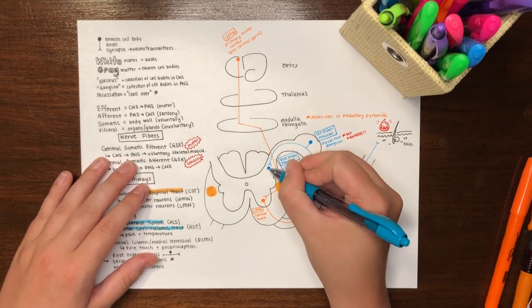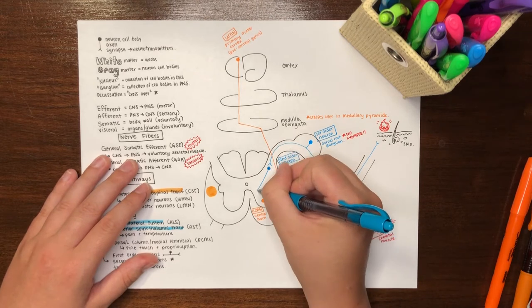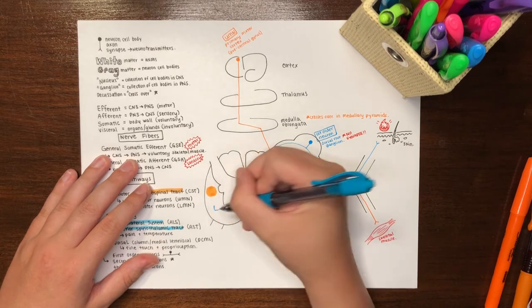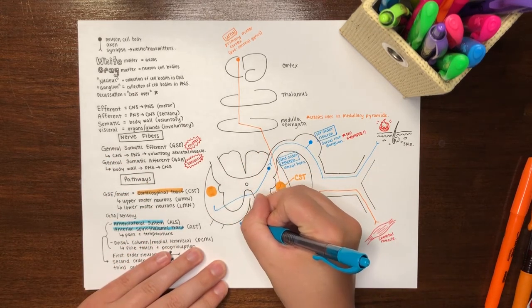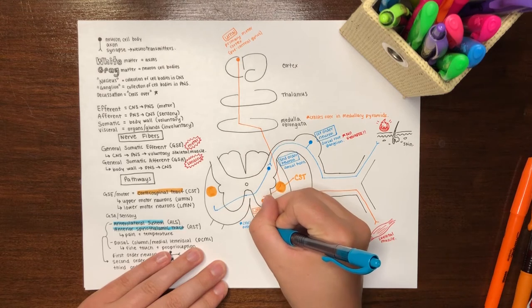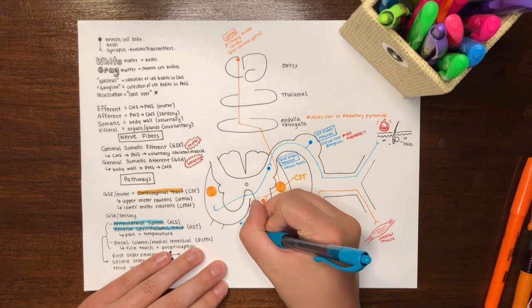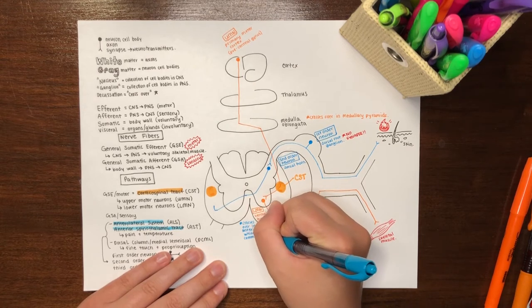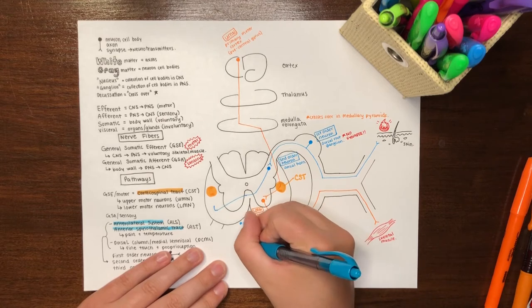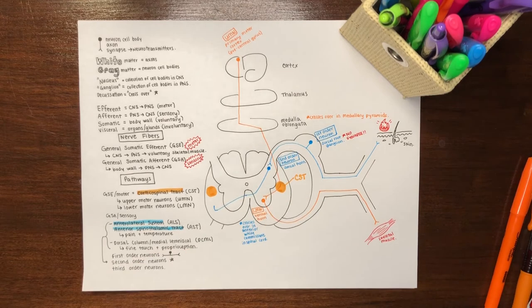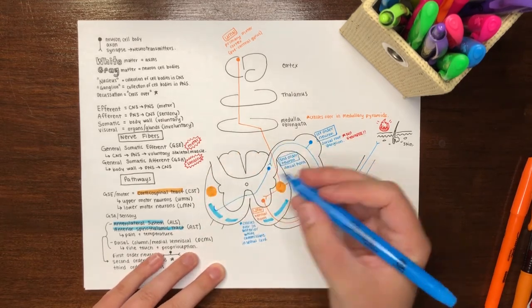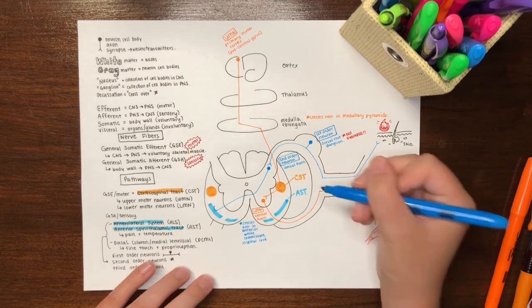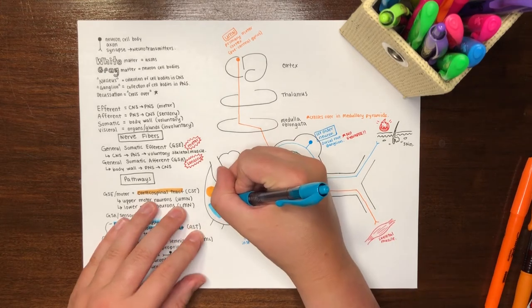Now we will continue with our second-order neuron, which is where the decusation, or crossing over, happens. In the AST-ALS system, the decusation occurs during the initial ascent of the second-order neurons within the anterior white commissure of the spinal cord. They are considered to cross over at or slightly above their spinal level of entry. The second-order neuron will continue ascending on the contralateral side of the anterior spinothalamic tract until it reaches the thalamus.